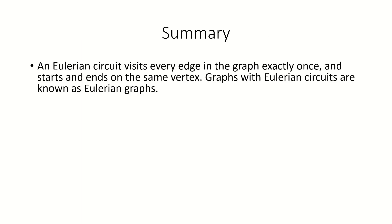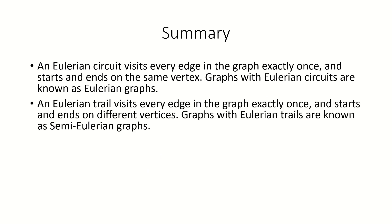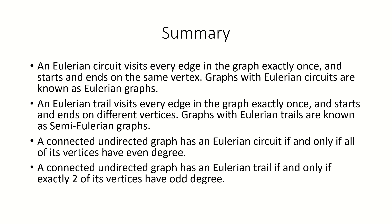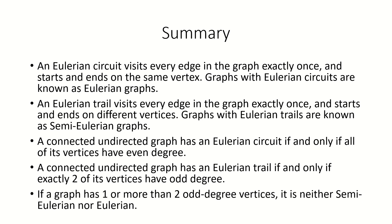To summarize: Eulerian circuits visit every edge exactly once and start and end on the same vertex. Eulerian trails visit every edge exactly once and start and end on different vertices. Connected undirected graphs are Eulerian if and only if all of their vertices have even degree. Connected undirected graphs are semi-Eulerian if and only if exactly two of their vertices have odd degree. Note that this implies any graph with one or more than two odd degree vertices is neither Eulerian nor semi-Eulerian.